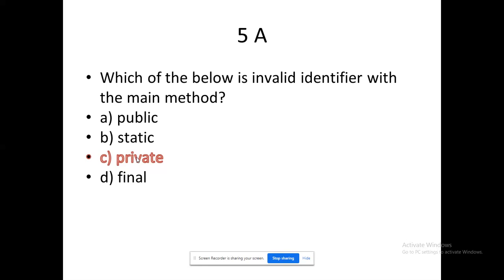For example, if you are creating 100 classes, the main method must be visible to all 100 classes because the main method is the one which will call all those classes and methods. So the main method must always be public. Private is the only option that we should not use with the main method — that is the main idea. So by that we have made a quick recap on this.